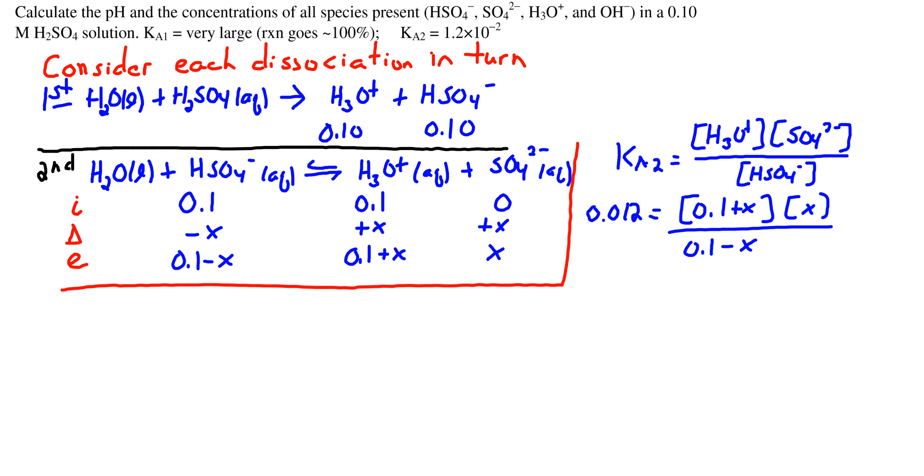The change in H3O+ in the second dissociation is X, and we gain X of the sulfate ion. We lose X of HSO4-.